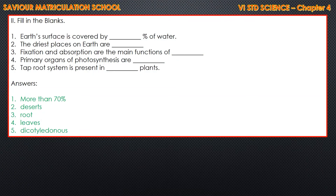Next, Roman number 3 in the book, children — that is fill in the blanks. First one: Earth's surface is covered by DASH percent of water. The answer is more than 70%. Second: The driest places on Earth are deserts.